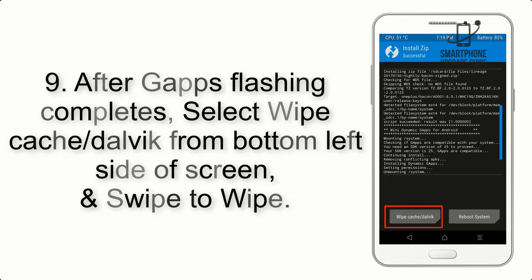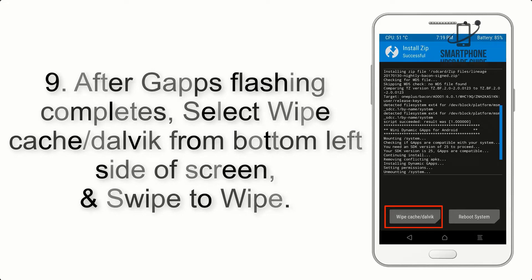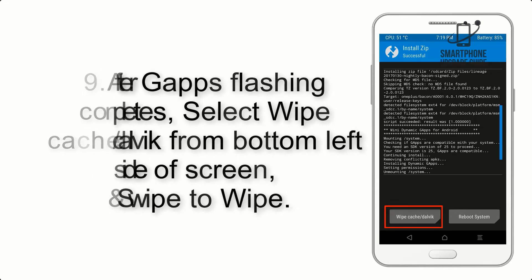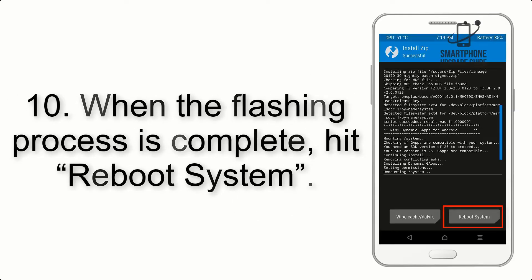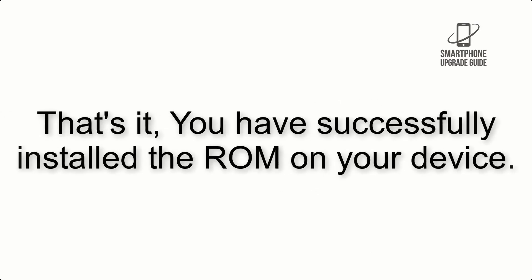Step 9: After GApps flashing completes, select Wipe Cache and Dalvik from the bottom left side of the screen and swipe to wipe. Step 10: When the flashing process is complete, hit Reboot System. That's it — you have successfully installed the ROM on your device.